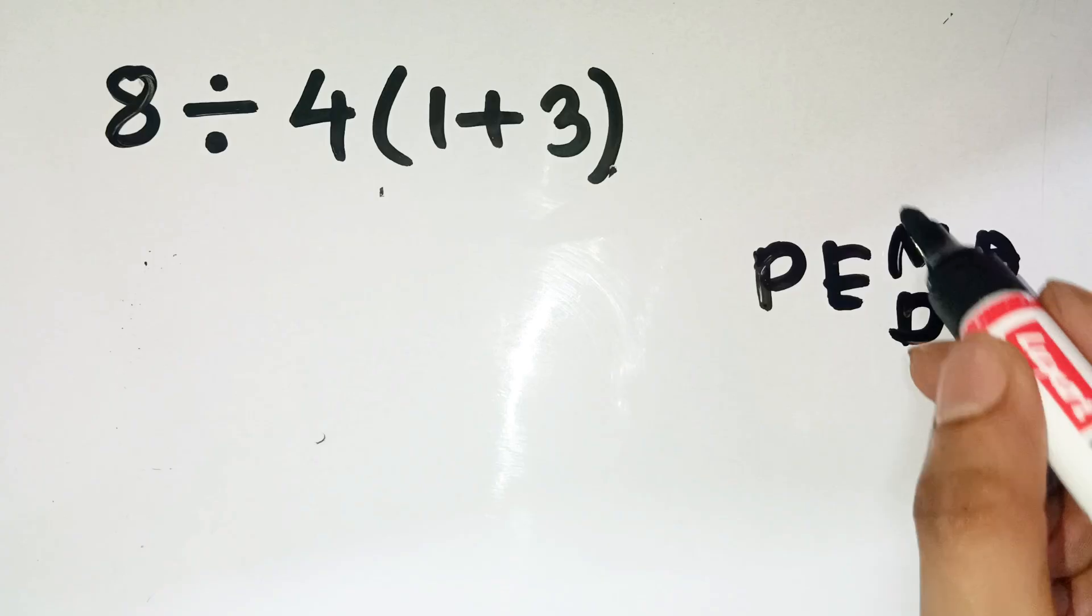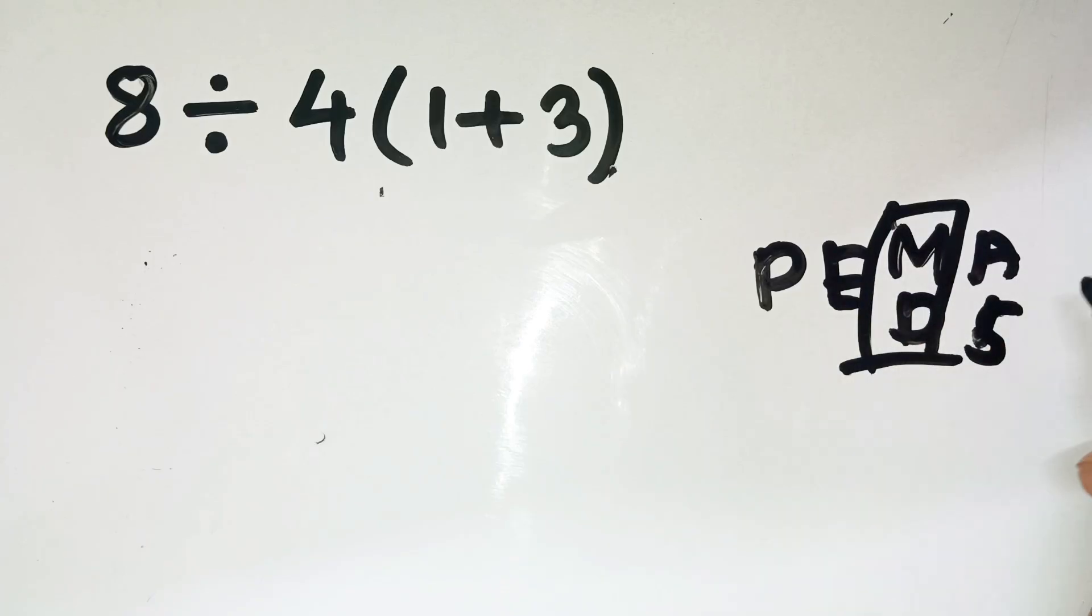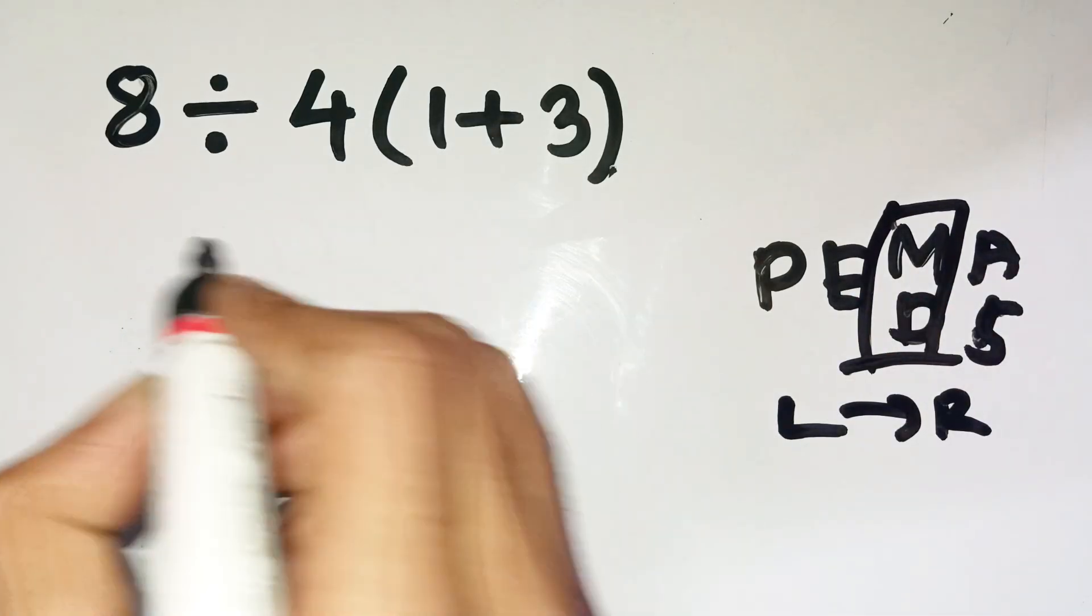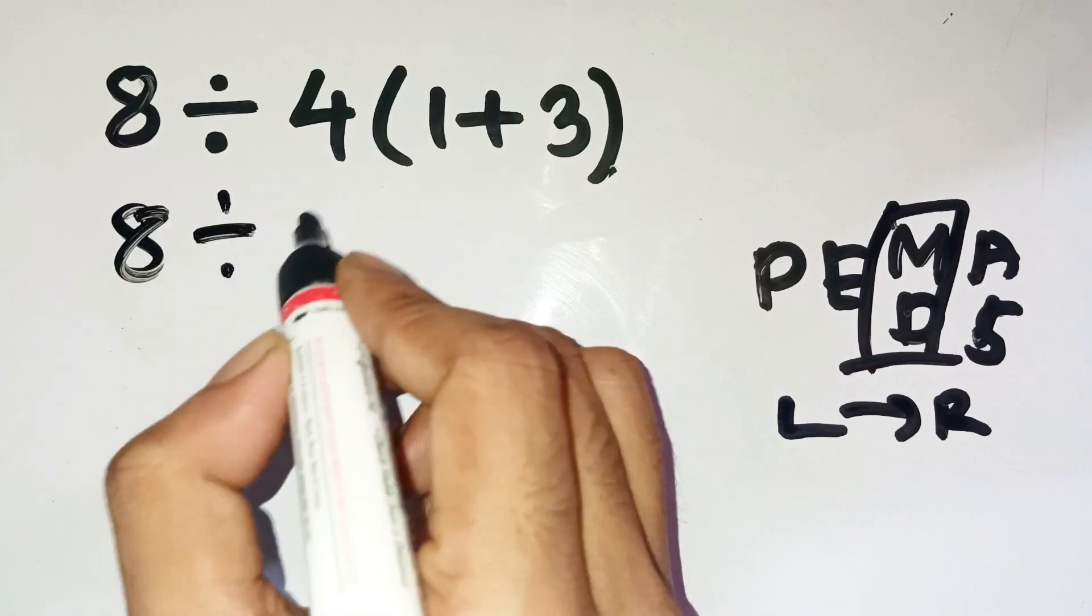Multiplication and division actually share the same priority. That means you go left to right, not just jump to whatever comes first in PEMDAS. So let's rewrite what we have. 8 divided by 4 multiplied by open bracket 1 plus 3, close bracket.